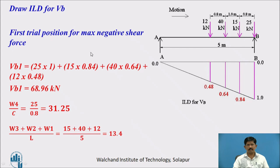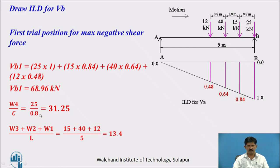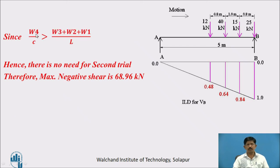Now for maximum negative shear at VB — we draw the ILD for VB and the motion is towards the right. The 25 kN load is placed exactly on B. VB1 = 25×1 + 15×0.84 + 40×0.64 + 12×0.48 = 68.96 kN (negative shear). Checking: W4/c = 25/0.8 = 31.25, and (15 + 40 + 12)/5 = 13.4. Since W4/c > remaining load ratio, no second trial is needed. Maximum negative shear = 68.96 kN.